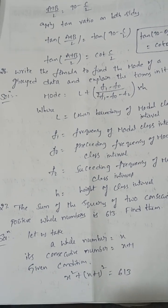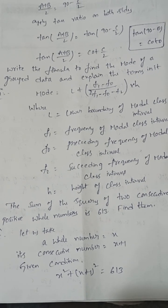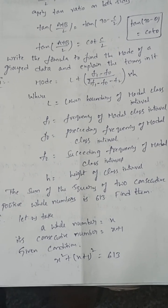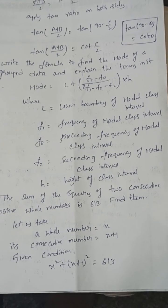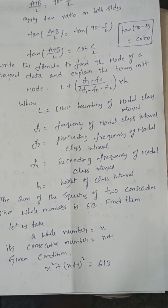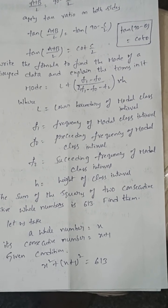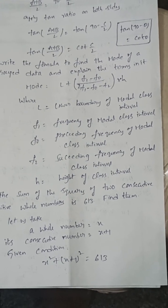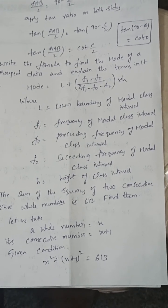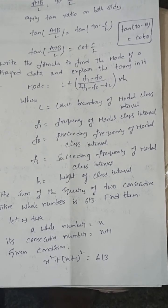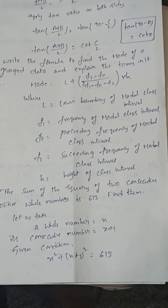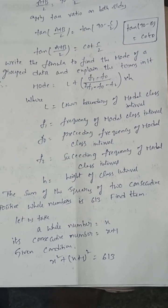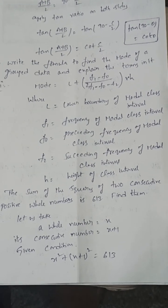Write the formula to find the mode of grouped data and explain the terms. Mode = L + [(F1 − F0) / (2F1 − F0 − F2)] × H, where L is the lower boundary of the modal class, F1 is the frequency of the modal class, F0 is the preceding frequency, F2 is the succeeding frequency, and H is the class height.